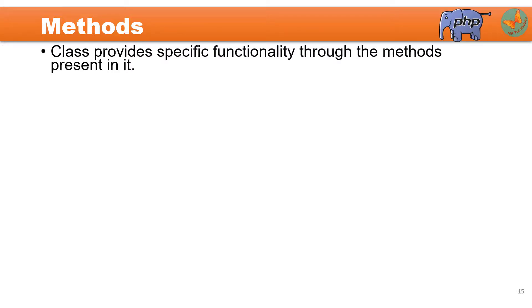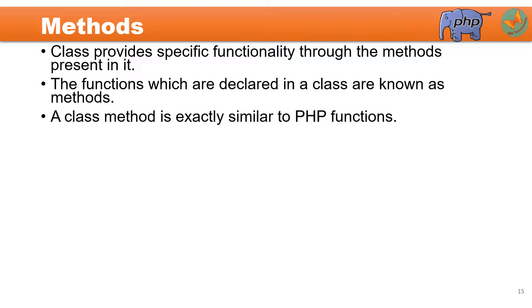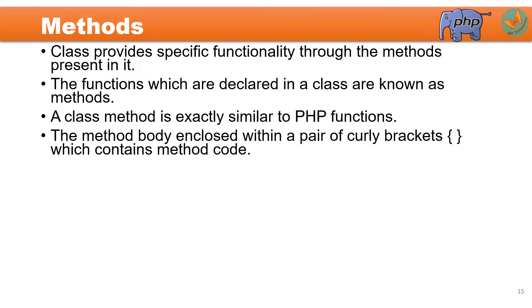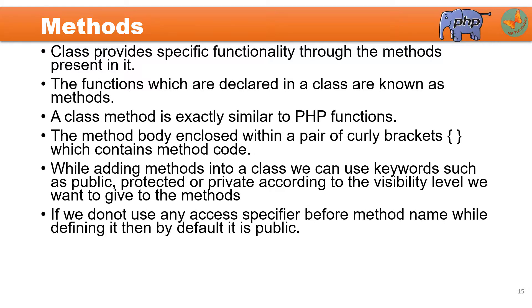Let us try to understand the behavioral aspect of a class. Behaviors are represented by methods. A class provides specific functionality by using these different methods. Functions which are declared within a class are known as methods, and these are very similar to regular PHP functions. Like a PHP function, we write the function keyword, the function name, curly braces, and the code of the method within the curly braces. We also have to specify the visibility level such as public, protected, or private. If no access specifier is mentioned then it is public by default.